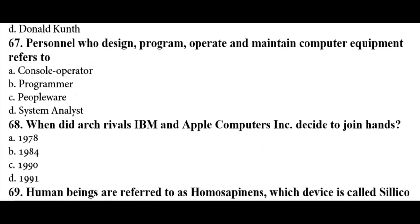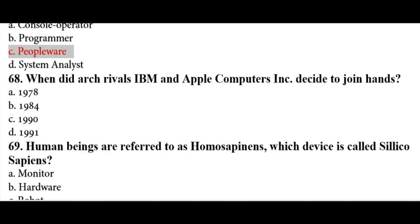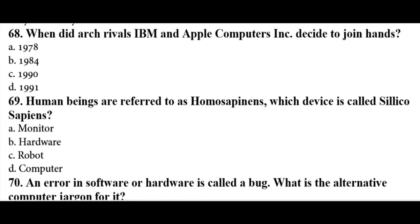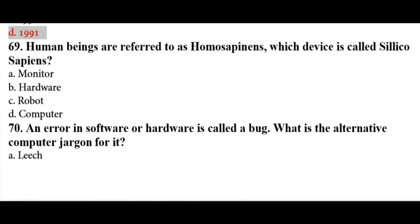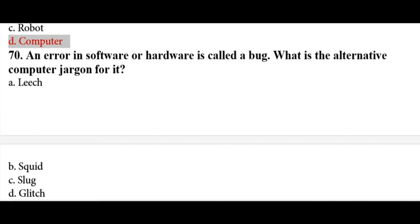The person who designs, programs, operates, and maintains computer equipment is referred to as people — not a programmer, analyst, or console operator. IBM and Apple decided to join forces in 1991 — must remember. Human beings are called Homo sapiens, and the computer is called Silico sapiens because computer chips are also called silicon chips.